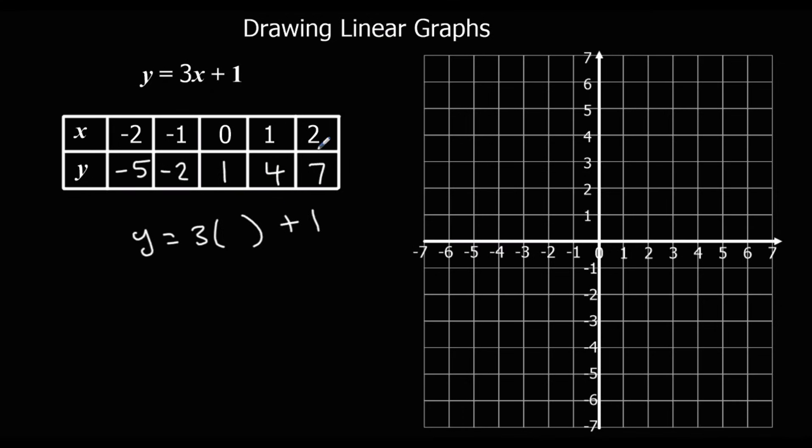Then plotting the coordinates. So 2, 7. 1, 4. 0, 1. Minus 1 minus 2. And minus 2 minus 5. And we draw a straight line that goes through each of the points. And it should look something like that.